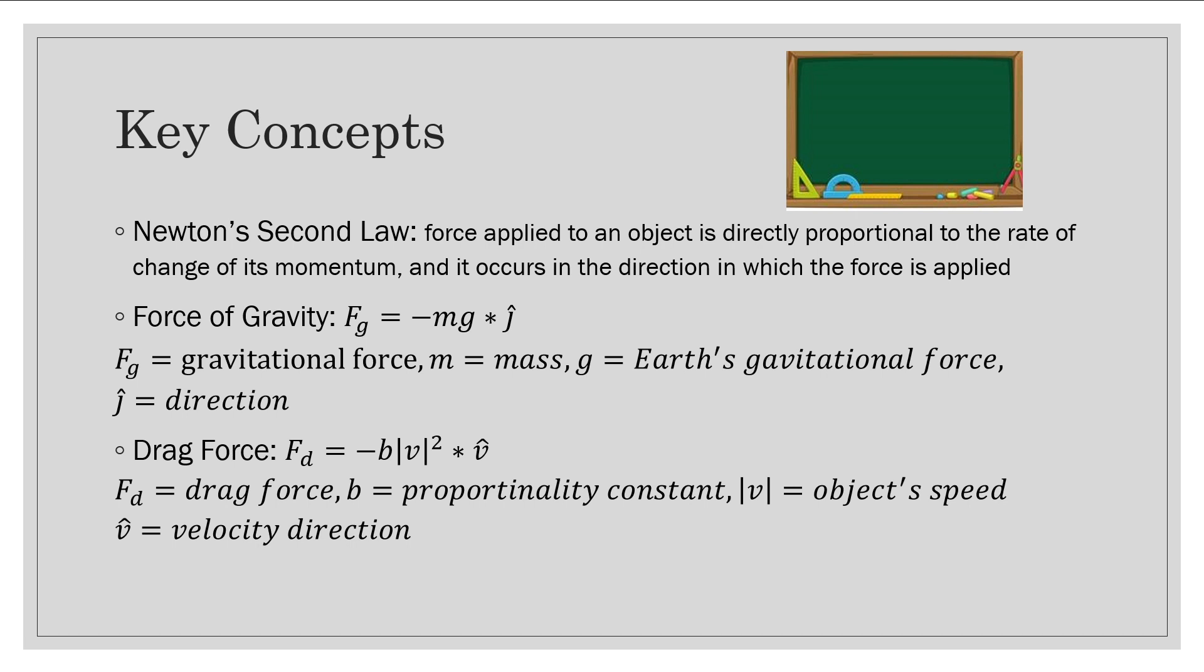We also need to know how to calculate net force, which can be calculated by the change in momentum over the change in time. Next, we can look at the force of gravity, which is negative mass times gravity, multiplied by the direction vector. Gravity is going to be 9.8, which is defined by the gravitational law, and if you are wondering why there is a negative sign, it is because the object is falling towards Earth, going down.